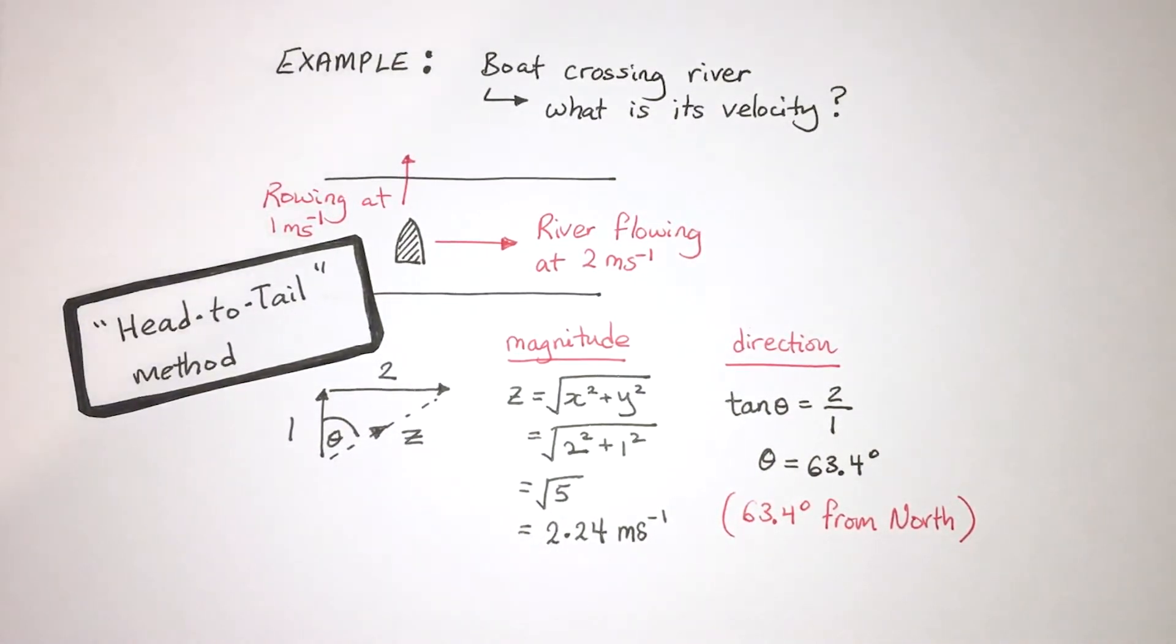Just to conclude, if you need to add coplanar vectors, you need to think about the vertical and horizontal components. And then use Pythagoras theorem to find the magnitude. And afterwards, use trigonometry to find the angle of the vector. Thank you for watching my tutorial.